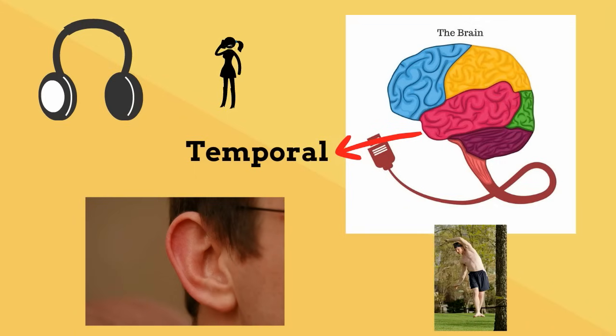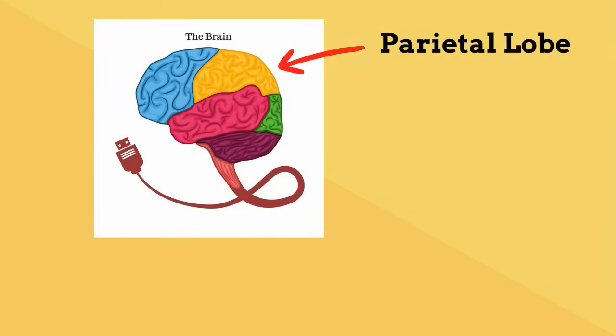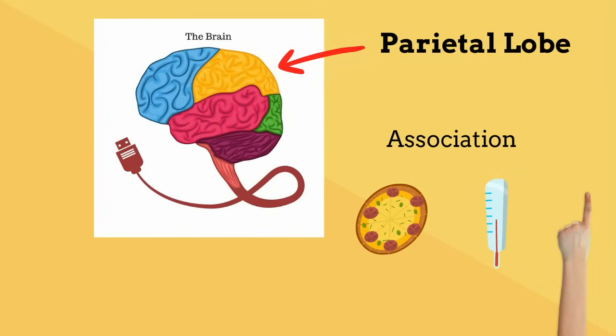The parietal lobe is also called the association lobe because it communicates with the other lobes. The parietal lobe is where information such as taste, temperature, and touch are integrated and processed.